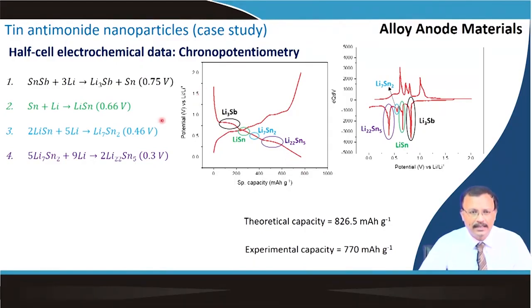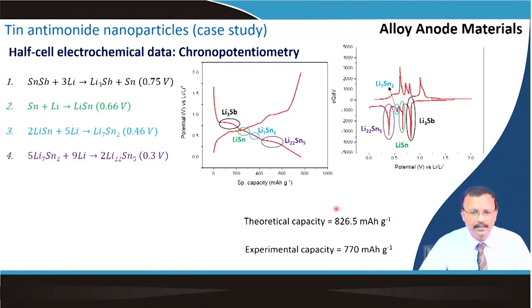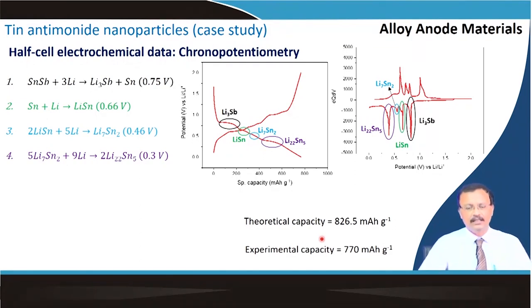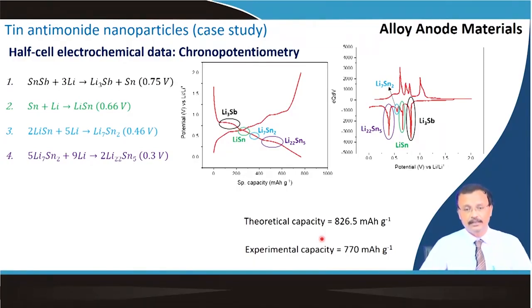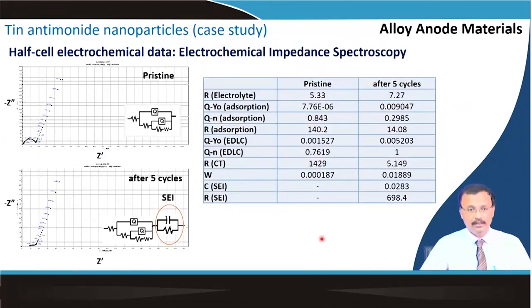You can estimate the theoretical capacity from each step, add them up, and compare to the experimental value. Experimentally we get results somewhat off from the theoretical total, and there could be various reasons — that is part of ongoing research. But if you get close to the theoretical capacity, you have confirmed that reversibility is quite good and you have prepared a good-quality sample.